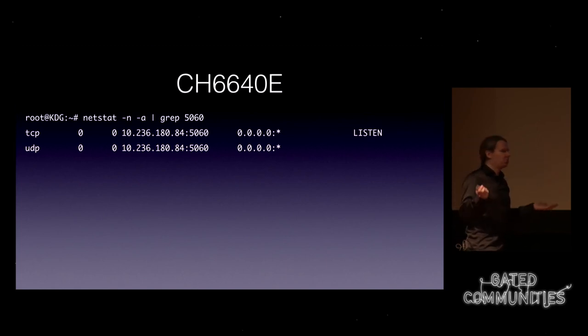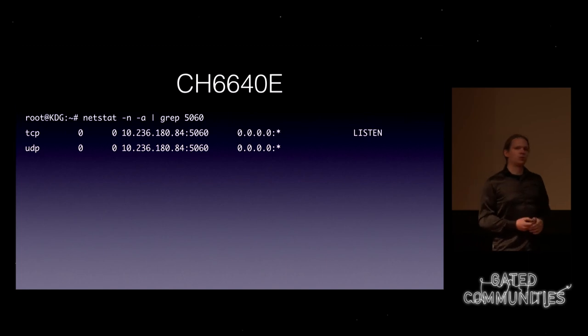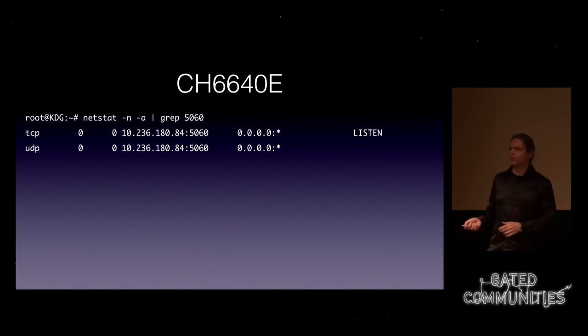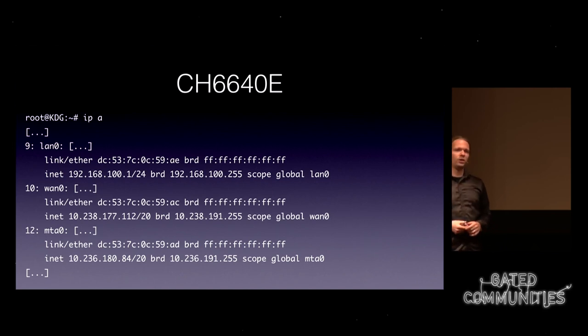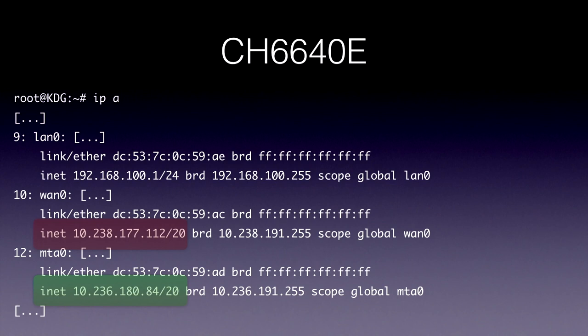But this IP looks weird — my external IP looks different and my internal IPs all look different. Where does this IP come from? I looked at the IP list of my device and figured: wait, something's weird. I have a lot of IPs in there and connections that I really don't know anything about. Down here is obviously my phone line, and up here is something else I have no idea about. So I figured let's dig a bit deeper and see what's actually happening.